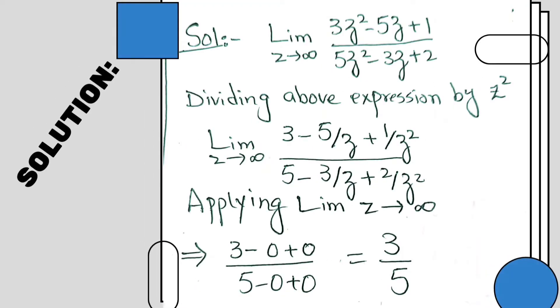So the solution for the question is here. First we divide denominator and numerator by z-square, and then we apply the limit z approaches to infinity and get the answer 3 over 5.